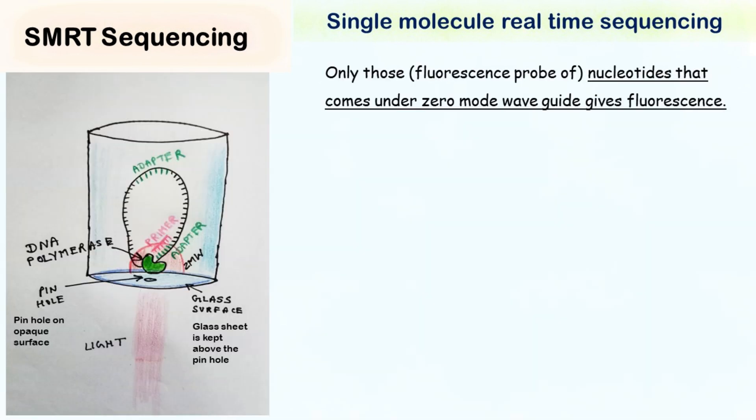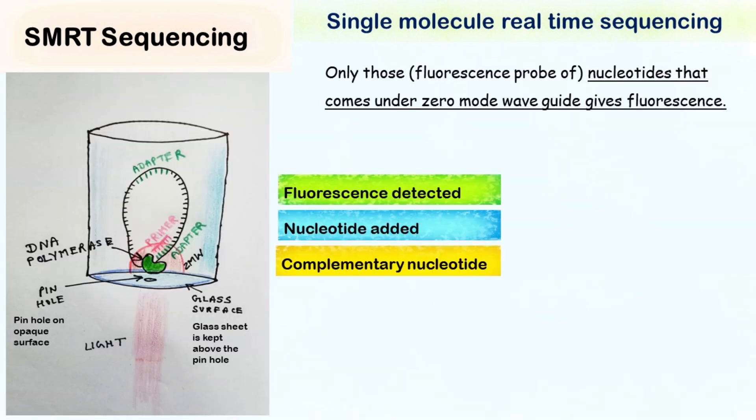When the DNA polymerase adds the nucleotides on the template, the fluorescent probe attached with the nucleotide gives fluorescence. The fluorescent signal is detected and recorded. And on the basis of this signal, we decode the nucleotide. So, this is like a live detection of nucleotide that is added by the polymerase.